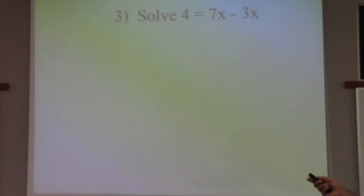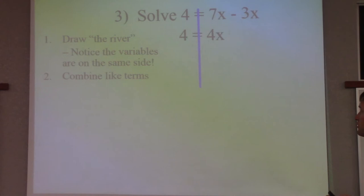Same as what we did yesterday. We want to go ahead and subtract these. 7 minus 3 is 4, so 7 minus 3 is 4x. Then to get rid of the 4, we divide by 4. x is equal to 1.